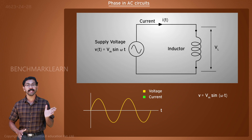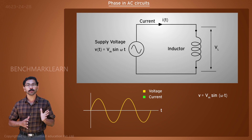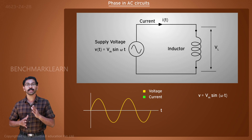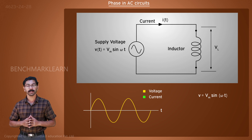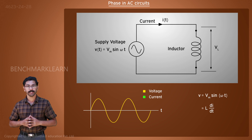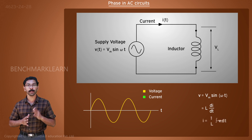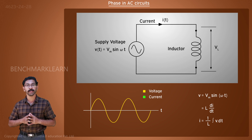Next, we connect an inductor to the AC voltage source. Here also, a current will flow through the inductor. But the equation for current is slightly different. For an inductor, the voltage-current relation is V equal to L into di by dt. We can rearrange it to write I equal to 1 by L into integral V dot dt.